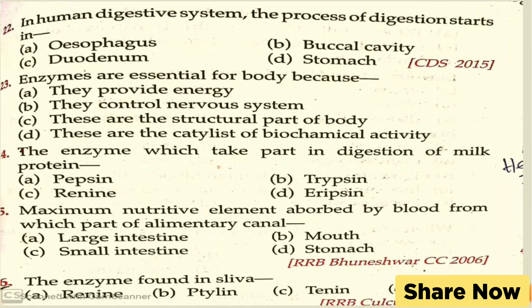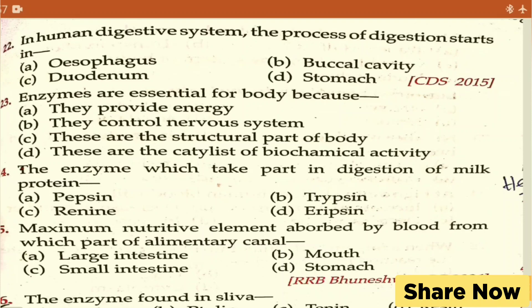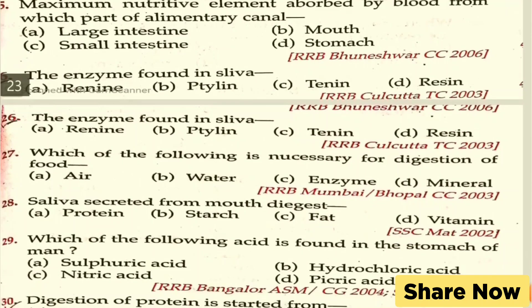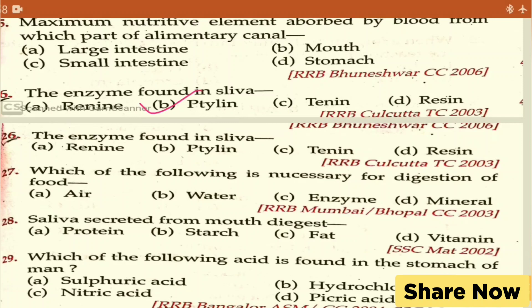Next question: in the human digestive system, the process of digestion starts in the vocal cavity — right answer. Enzymes are essential for the body because they are catalysts of biochemical activities — right answer D. The enzyme that takes part in digestion of milk protein is rennin. Maximum nutritive elements are absorbed from the small intestine — 90%.